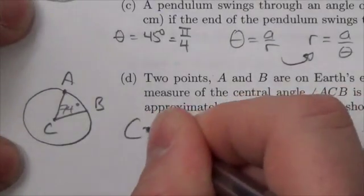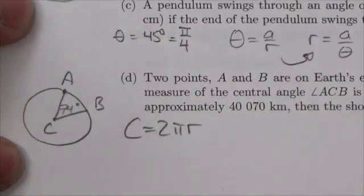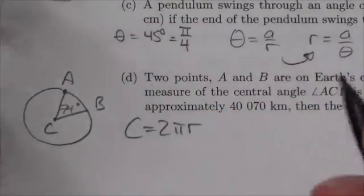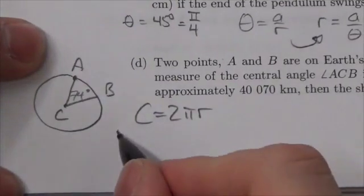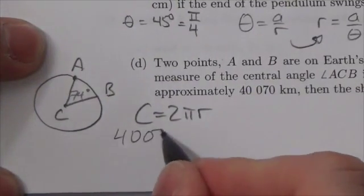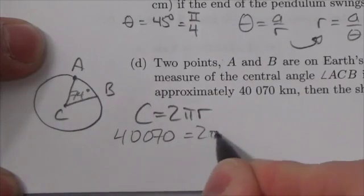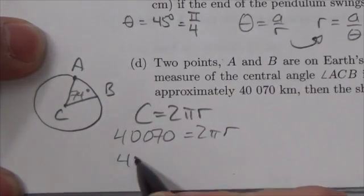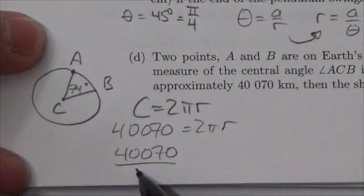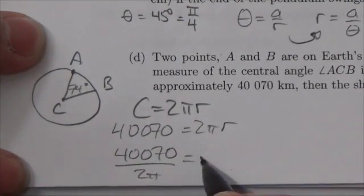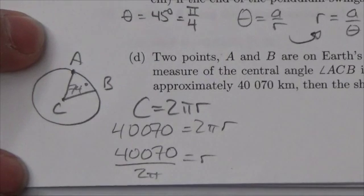So why would I give you circumference? Well, I'd give you circumference so that you would have to go through the process here of finding the radius. I'm adding a couple of steps to your work here. Okay, so I know, it's 40,070 kilometers equals 2πR. If I divide that, I know that my radius here is going to be 40,070 over 2π. Okay, so there's my radius.